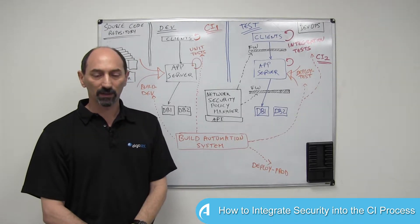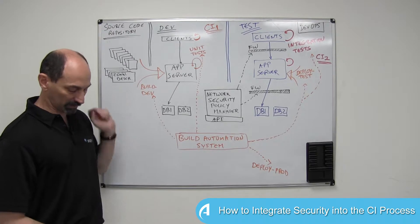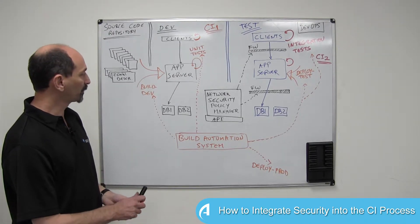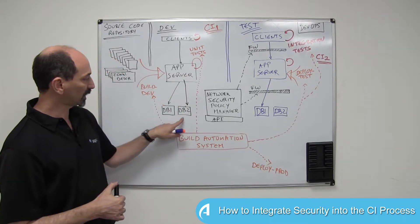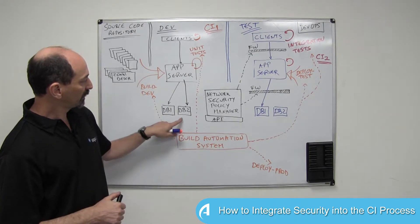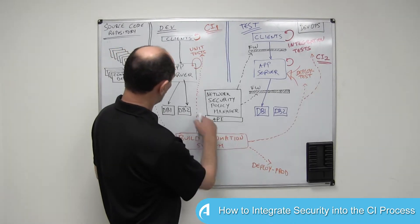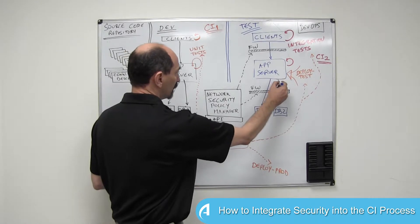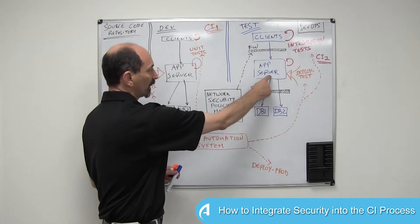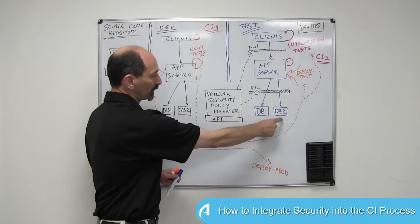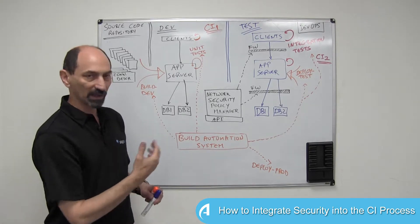Now let's introduce the notion of what happens when you need security. If the developers, in their development cycle, actually change the application so that it requires access to another network resource — let's say this other database — and the build automation system is not aware of this, then when the code is deployed to the test environment, it will fail the tests because there is a firewall separating the application server in the test environment from the test database. And that firewall was not updated to allow the requested traffic. So we get a failure.